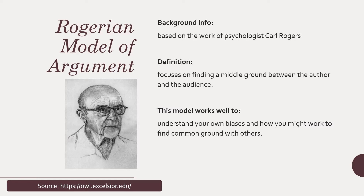This model works well to understand your own biases and how you might find common ground with others. There is a slight difference between the first model — Toulmin — and the Rogerian model. Toulmin is about proving that your solution or claim is better than others through structured analysis, whereas Rogerian is about finding a middle ground between your claim and the other person's claim.